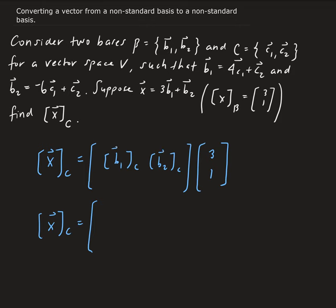It's going to form the first column of the coordinate matrix. So b1, b1 is a linear combination of 4 and 1.